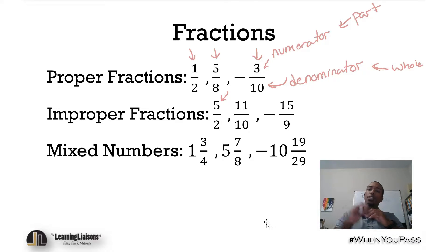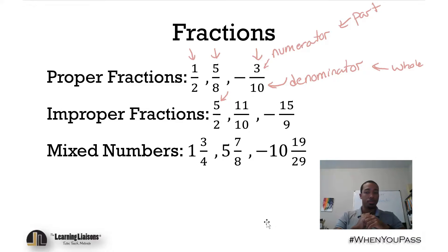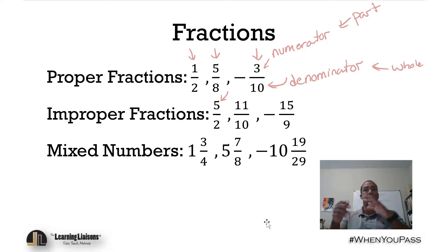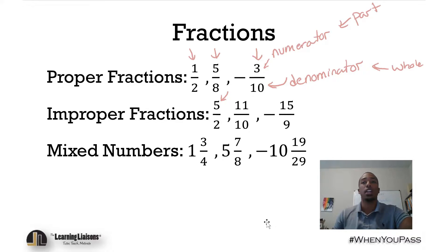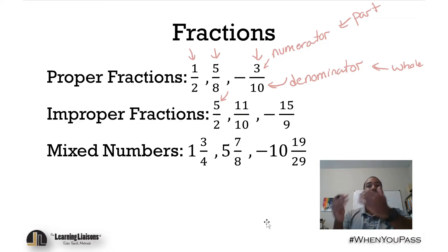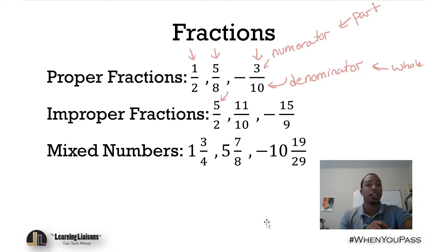And then we have negative 15 over nine, which would be something just about negative 1.6 repeating. With practice, you can look at any fraction — proper, improper, or mixed — and generally know where that number might lie.